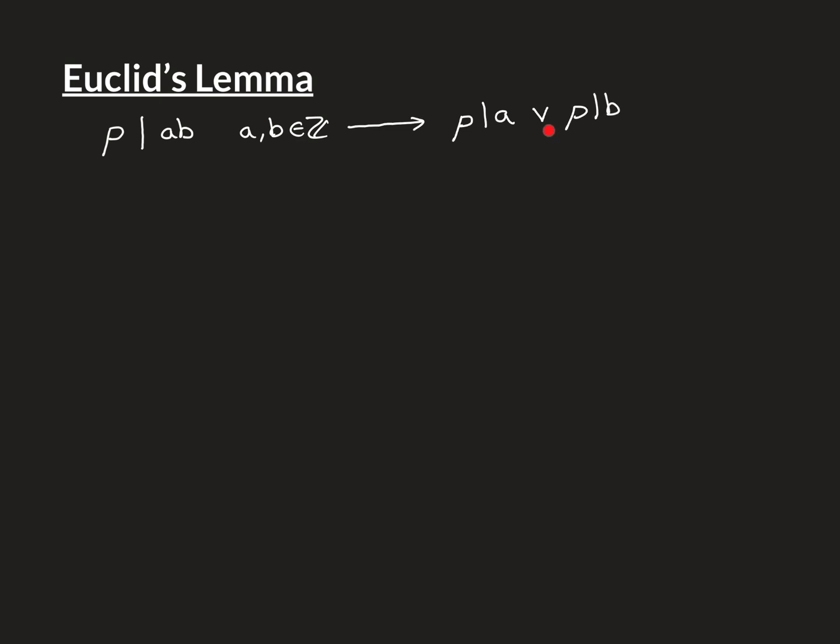and this or is maths or, it's inclusive or. Always in maths when we use the word or or use the symbol or, we mean inclusive or, and this is actually very different to how or is used in English. When people say or in the English language, they actually mean exclusive or. So for instance,